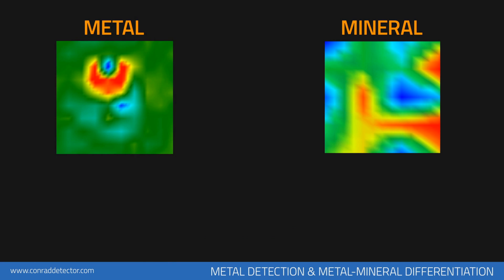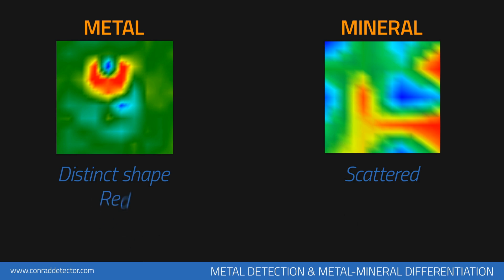You can see results corresponding to metals to your left and to non-metals to your right. While metallic objects are irregular in shape, minerals are typically scattered and broad. Metallic objects are red and minerals are typically yellow or orange in color.